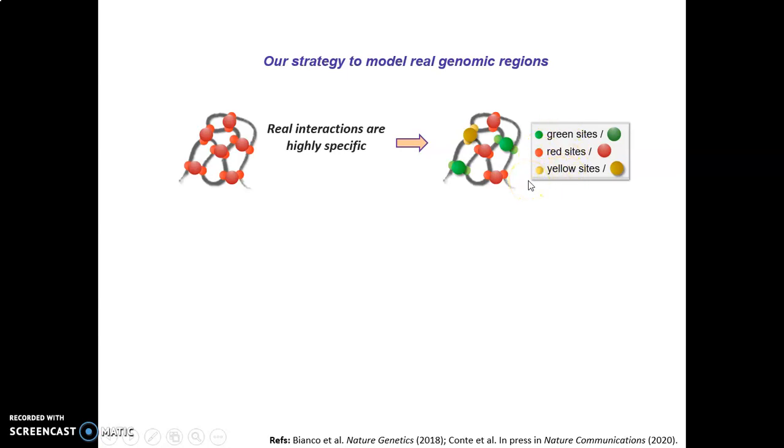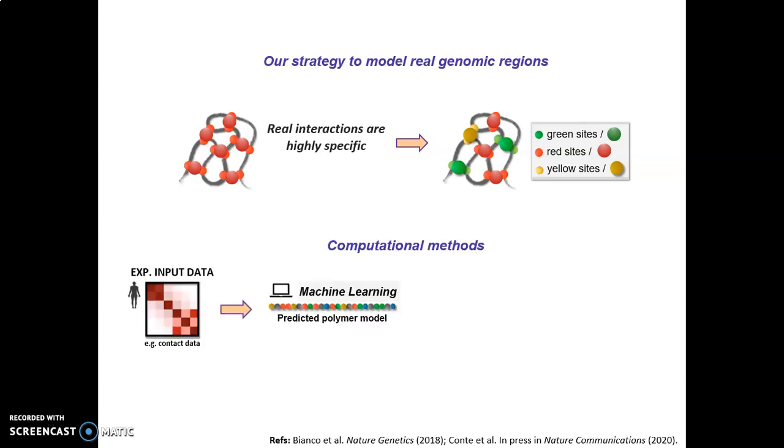So, the question now is, which is the correct number of colors we need to model a real genomic region? And how are those colors distributed along the polymer chain? To estimate those parameters, that are the only three parameters of our model, we developed a machine learning procedure that takes as input experimental data on the genomic region we are interested in. And this algorithm returns as output the optimal polymer model for that genomic region, namely the number of colors we need and their arrangement along the polymer chain to explain the data of the region we are studying.